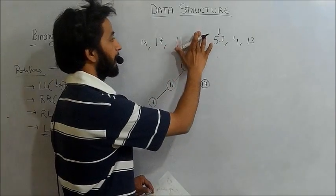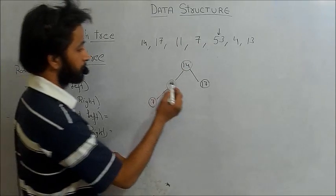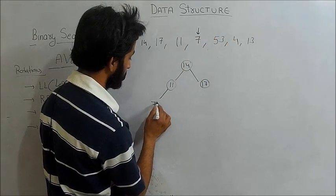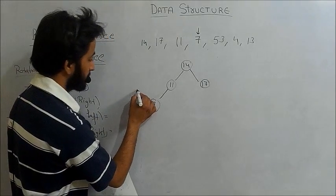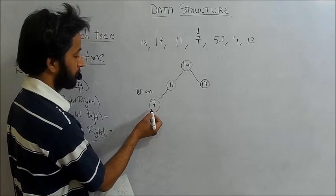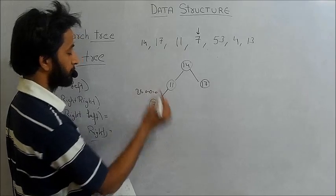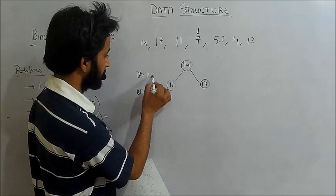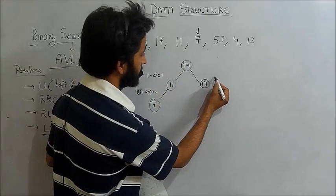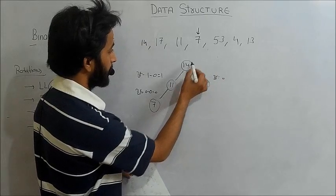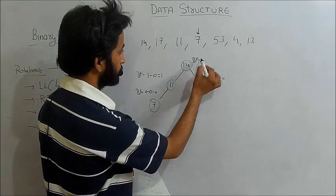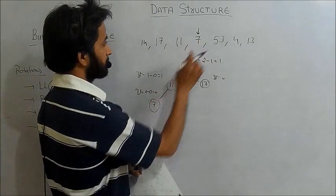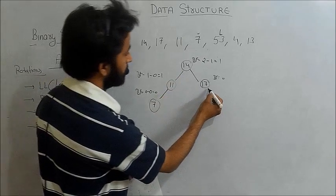After inserting 7, we check the balance factor. BF at node 7 is zero, BF at node 11 is one minus zero which is one, BF at node 17 is zero, and at the root node 14 the balance factor is two minus one which is one. All are within AVL limits so it is okay.